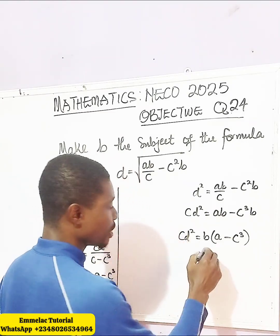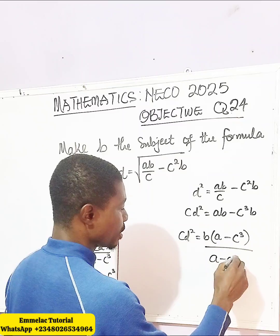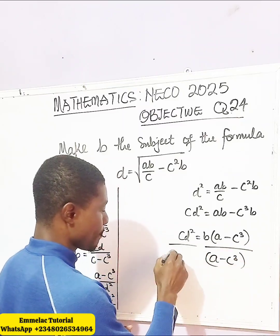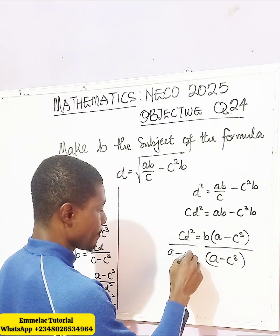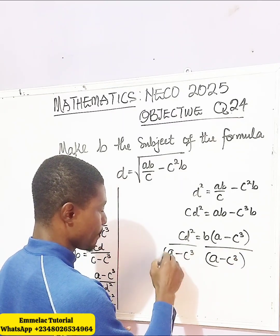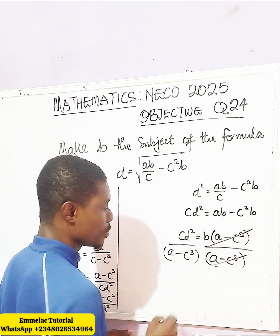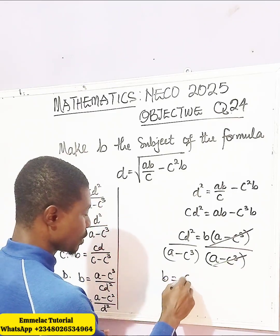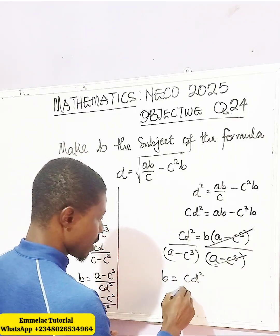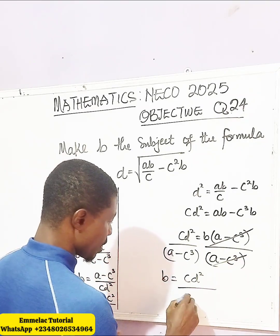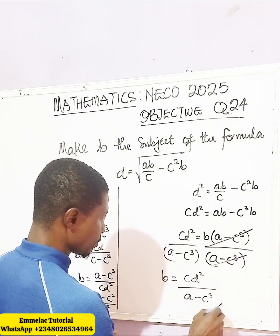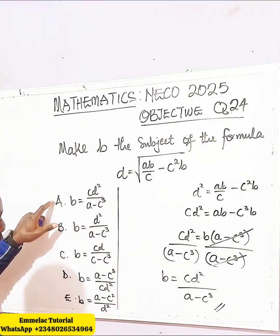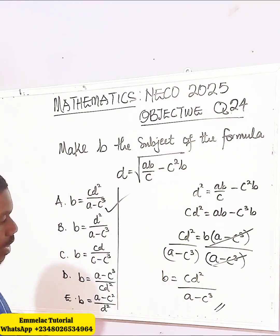So let's divide both sides by A minus C cubed. This undoes it, and we are left with B equals CD squared all over A minus C cubed. So A is the right answer.